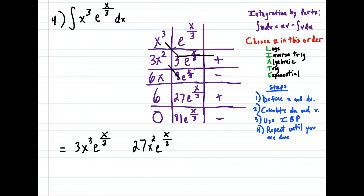However, that minus sign tells us in this row to change the sign. So instead of a positive 27, we're going to have a minus 27 in front. So now we just continue this process — we're multiplying 6x times 27e^(x/3). And when we multiply these two together, we're going to get 162x e^(x/3). And the plus sign in this row tells us that we're going to keep the sign the same, so this is going to be a plus 162.